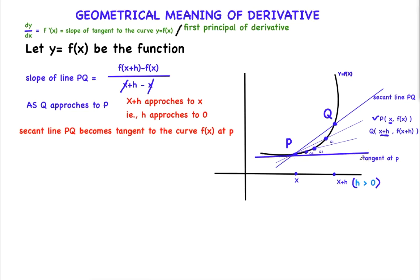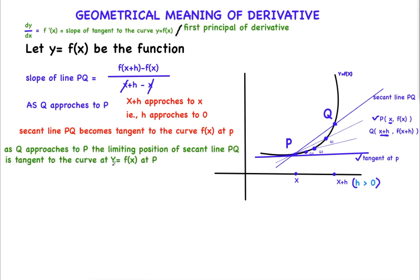Please observe this line — it is the tangent to the curve at point P. As Q approaches P, what is the limiting position of the secant line PQ? Q moves and moves until its limiting position is P. The limiting position of secant line PQ as Q approaches P is the tangent to the curve at point P.